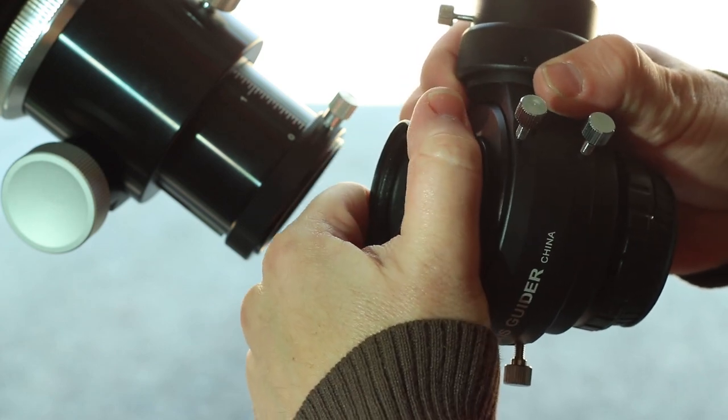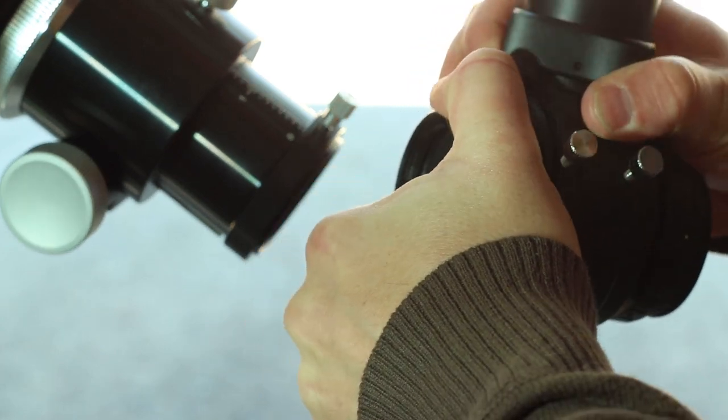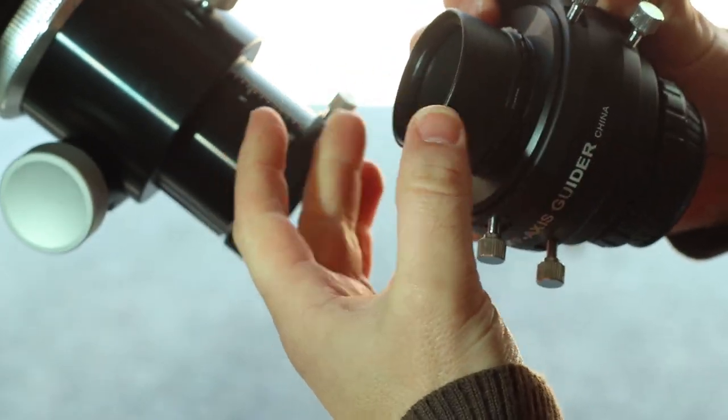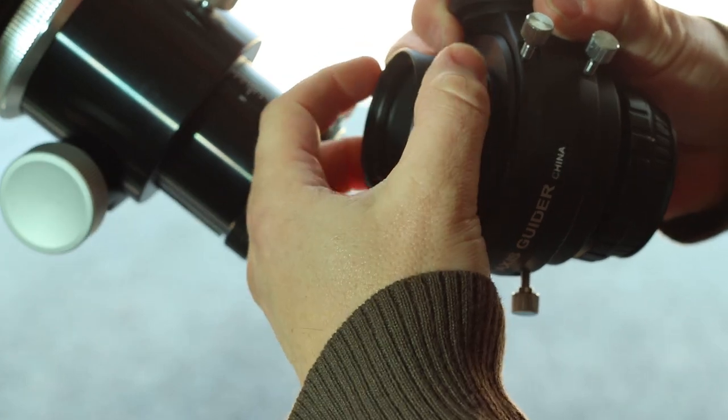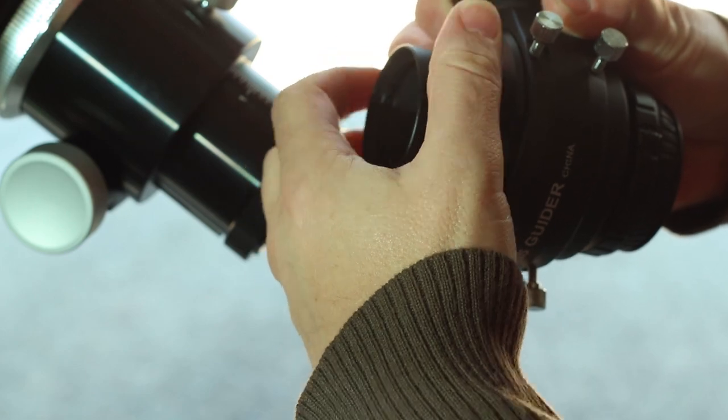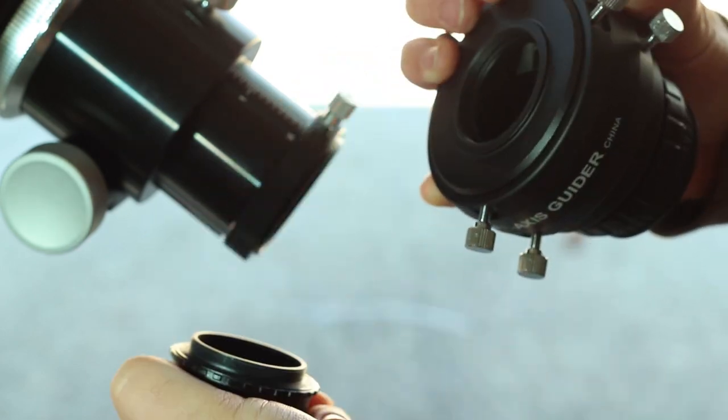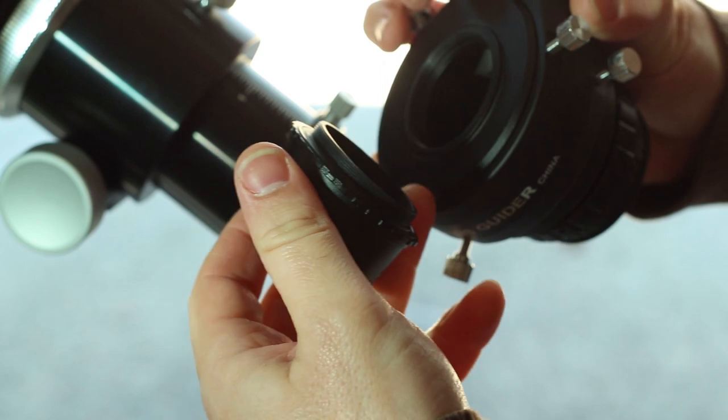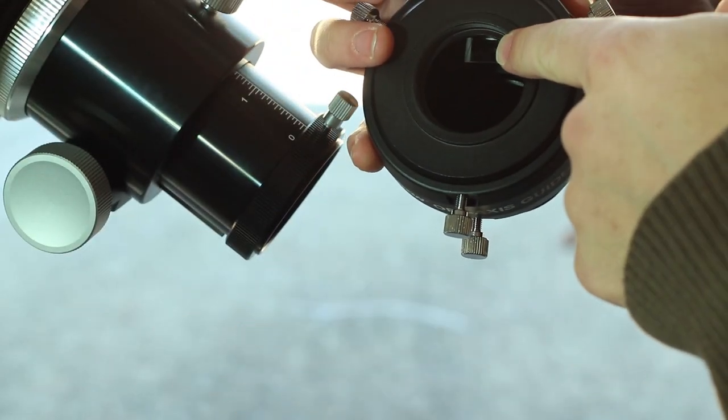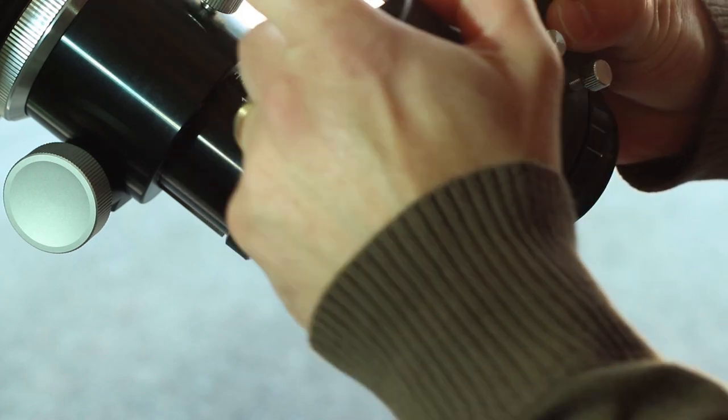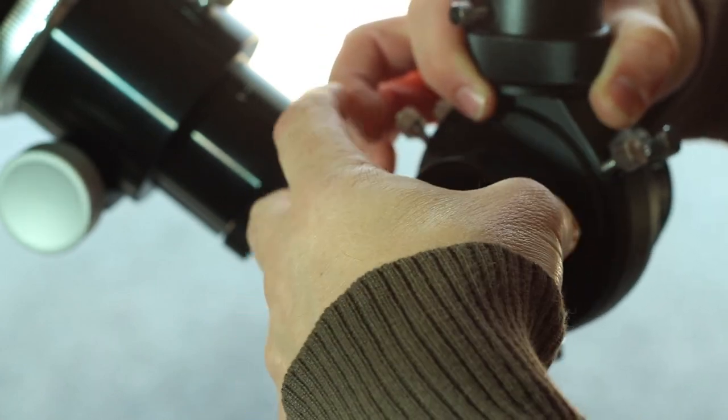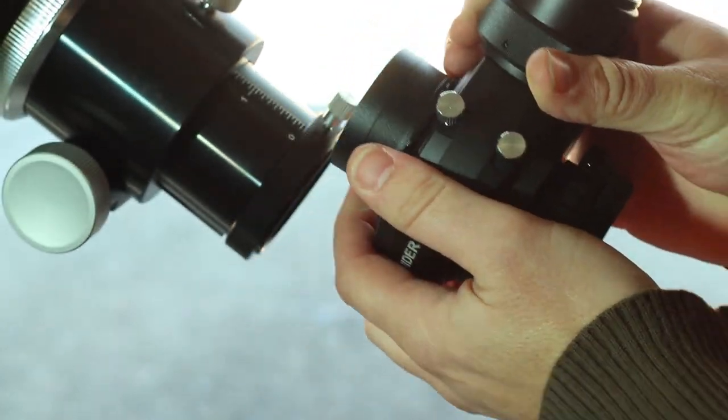So what we have here - I actually did it a little different than what it recommended inside the manual. I've got a M42 spacer, a male M42 T-thread spacer which goes into the female M42 adapter. And be sure that the prism, the flat side of the prism, is facing the telescope.